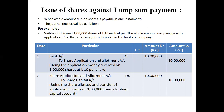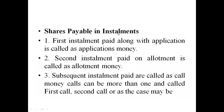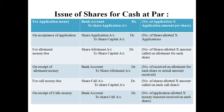इस पैसे को हम share capital में transfer कर देते हैं। Entry बनती है: share application and allotment account debit to share capital account — being transfer of application money on one lakh shares to share capital, 10 lakh rupees। Sometimes जो shares issue होते हैं installment में किए जाते हैं। First installment paid along with the application is called application money, second installment paid on allotment is called allotment money, and subsequent installments paid are called call money. The calls can be more than one: first call, second call, third call, etc.